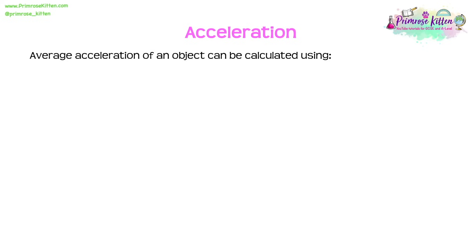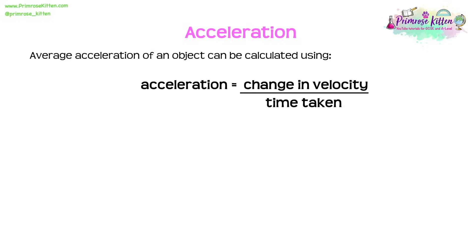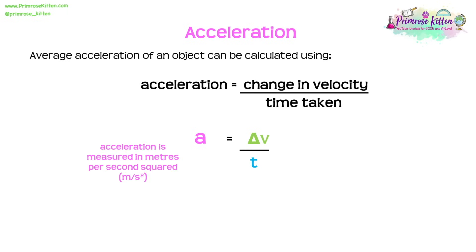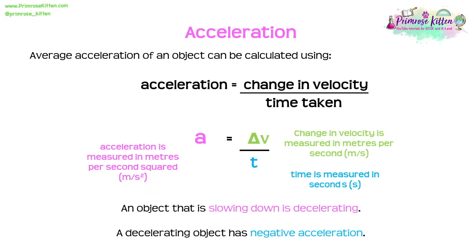Average acceleration can be calculated using: acceleration equals change in velocity over time, or a = Δv / t. Acceleration is measured in metres per second squared, change in velocity in metres per second, and time in seconds. Objects that are slowing down are decelerating, and deceleration is negative acceleration. Since acceleration is a vector, the positive or negative sign gives us the direction of the acceleration.